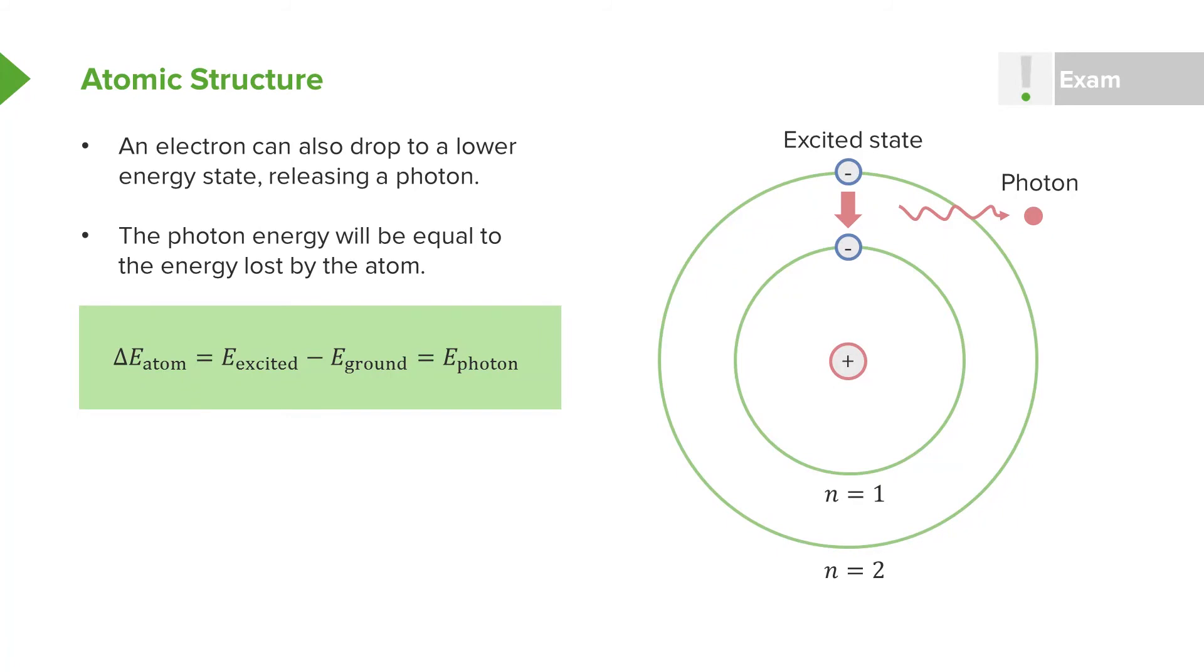minus the ground state energy. And this is because we have the excited energy being a bigger number, and then the ground state energy being a smaller number. And using this equation, we can find what energy the photon must have, again just using conservation of energy.